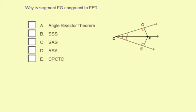We have the angle bisector theorem, some different triangle congruences, and corresponding parts congruent triangles are congruent.